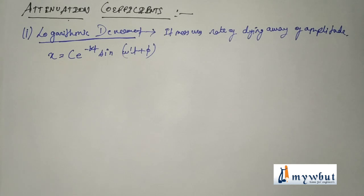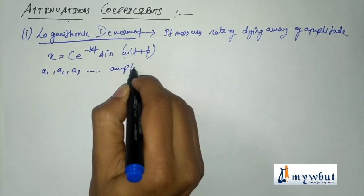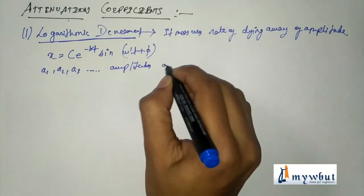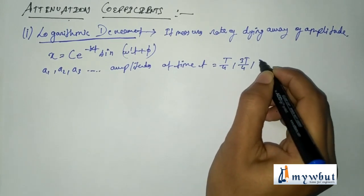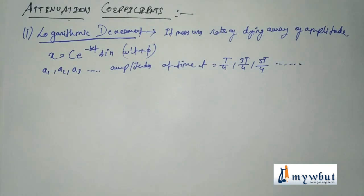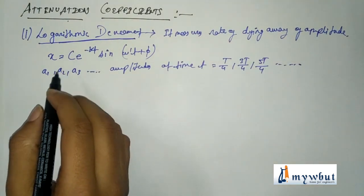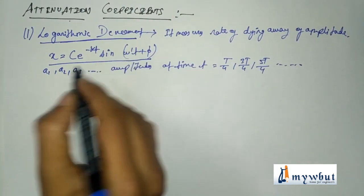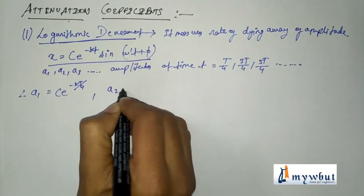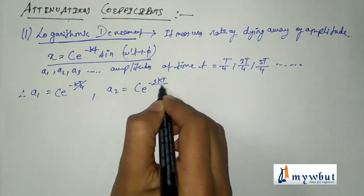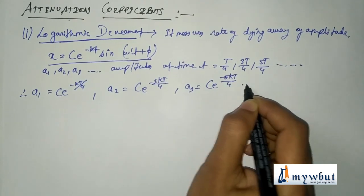Let a1, a2, a3 be successive amplitudes at times t equal to T by 4, 3T by 4, and 5T by 4 respectively, where T is the time period of oscillation. From the general equation of damped oscillatory motion, a1 equals c e to the power minus kT by 4, a2 equals c e to the power minus 3kT by 4, and a3 equals c e to the power minus 5kT by 4.